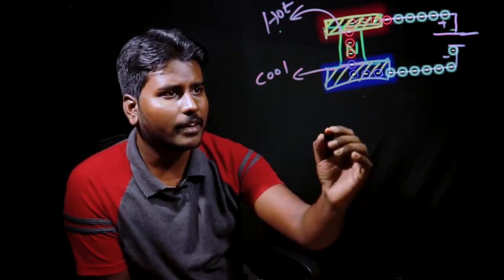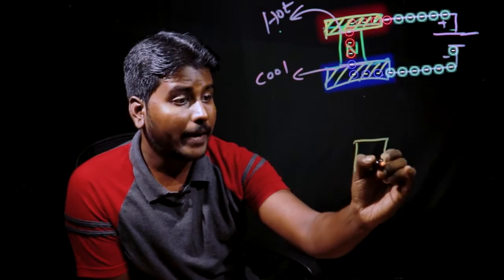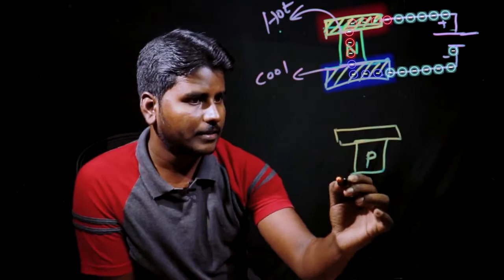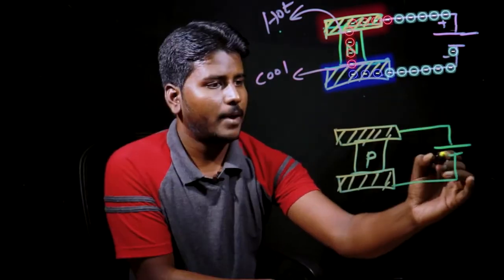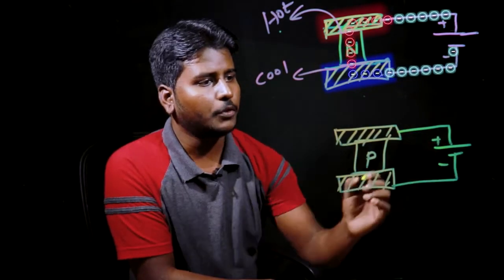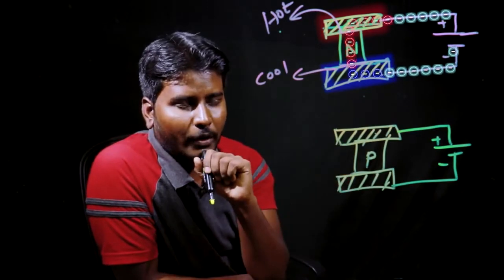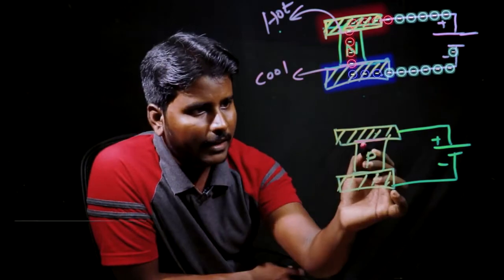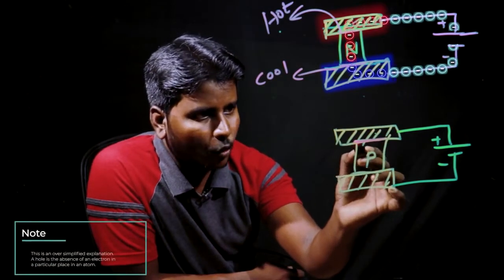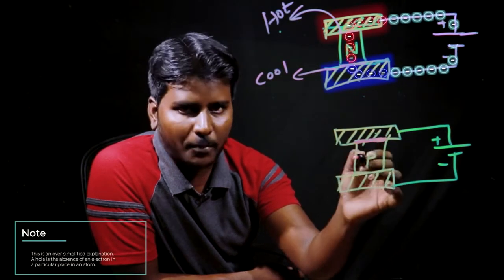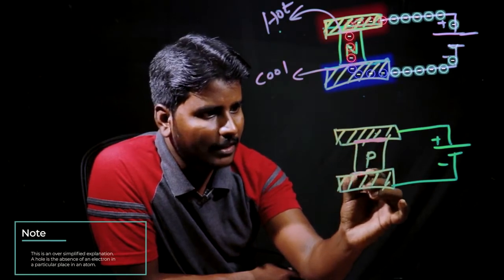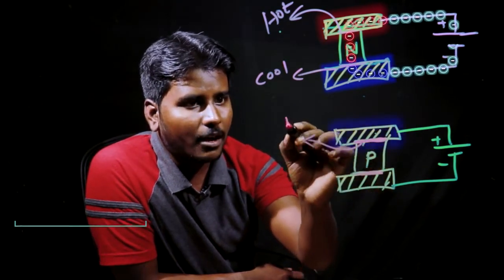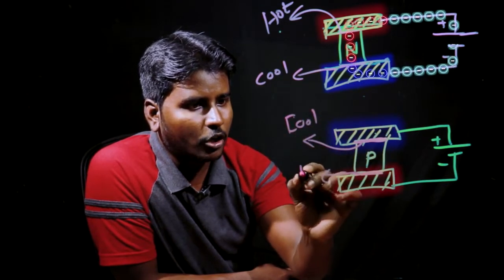This is a P-type semiconductor. The electrical contact here is a copper contact — positive and negative. If you consider the P-type semiconductor, the majority charge carriers are holes. Holes are positively charged. The holes will absorb the heat in the local area and deposit it. So now, this side is cool and this side is hot — you can create a temperature gradient.